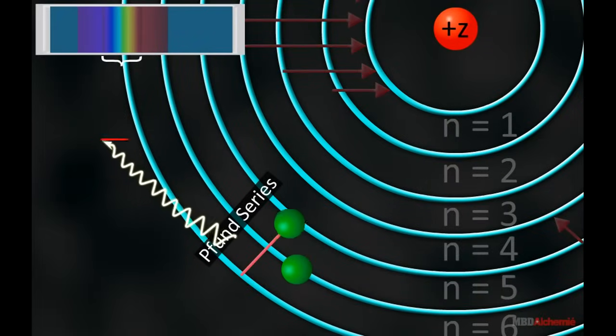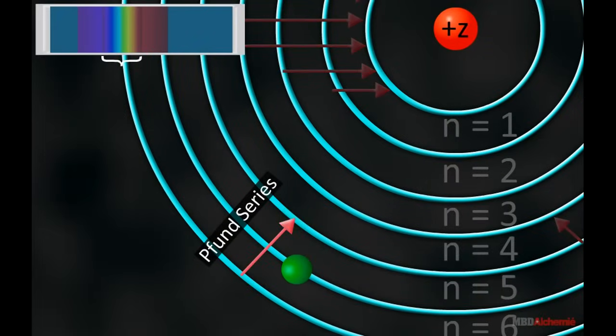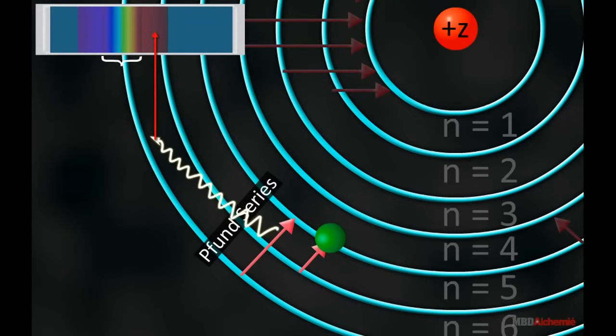When a transition from higher orbits to the fifth orbit occurs in the atom, the Pfund series is obtained.